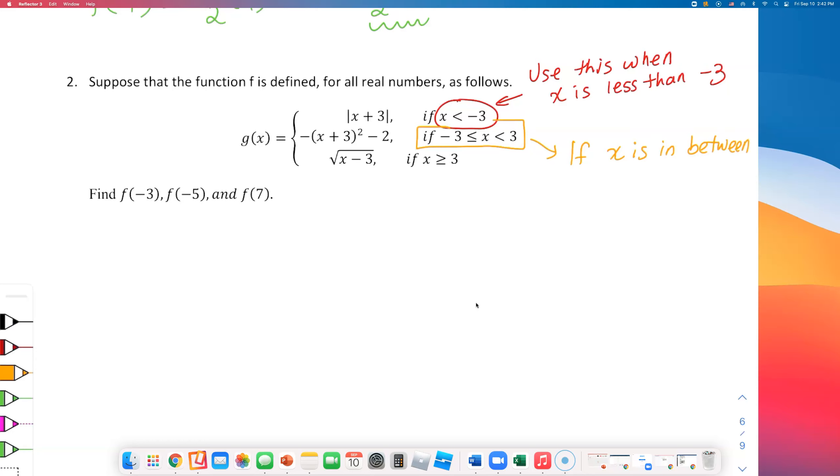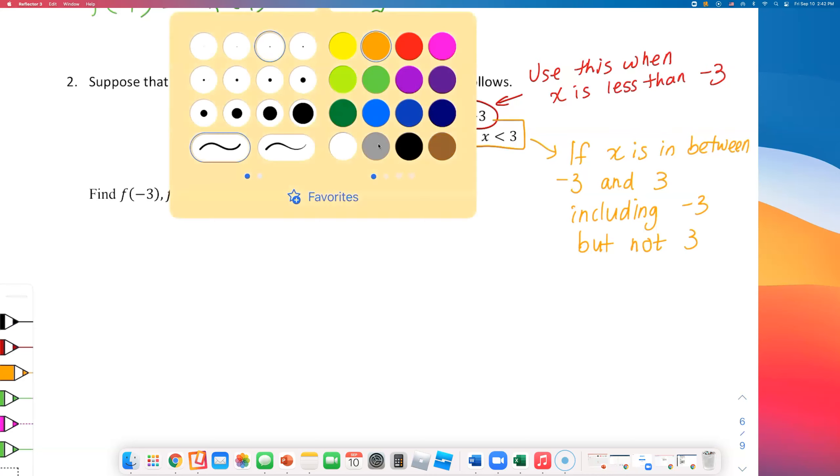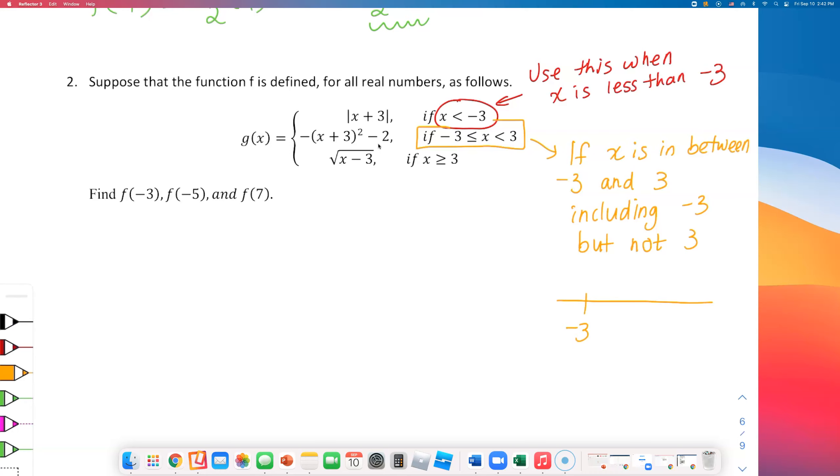If x is in between negative 3 and 3. See, that's where x is. It is in between negative 3 and 3. But look, it says x can be equal to negative 3, including negative 3, but not positive 3. That's what's happening. So if you have negative 3, you're going to have to plug it into this middle function.